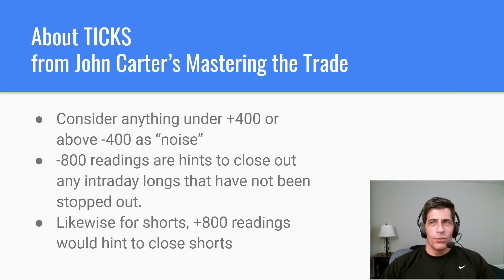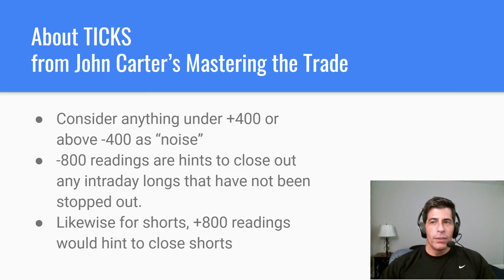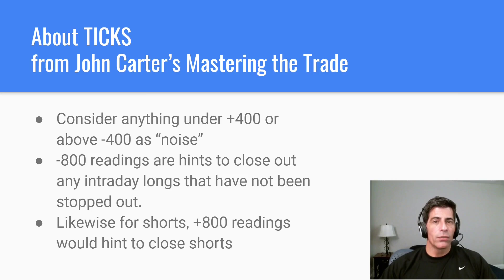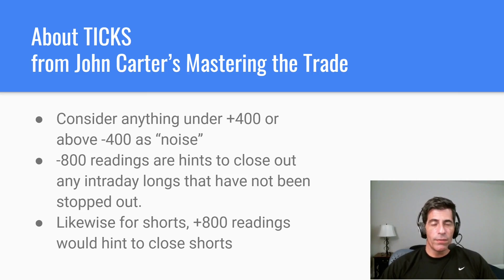This comes from John Carter's Mastering the Trade — he actually uses ticks in intraday trading. He says anything under plus 400 and anything above minus 400 is just noise. Negative 800 and greater readings are where you take real action — a minus 800 means a lot of selling pressure and hints that you should close out intraday longs if you haven't been stopped out. Likewise, a plus 800 reading hints to close out shorts.